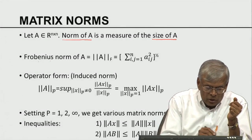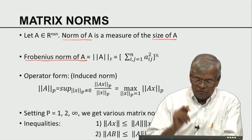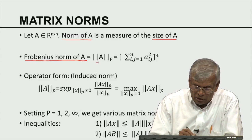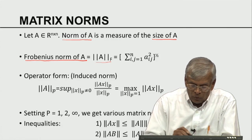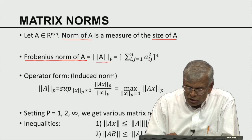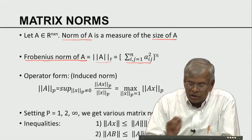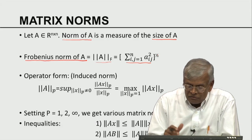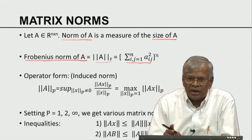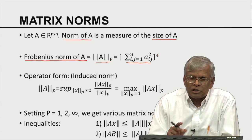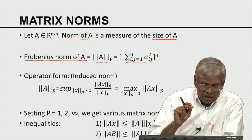The first norm is called the Frobenius norm. The Frobenius norm of A is simply an extension of the Euclidean norm to matrices, denoted with subscript F. You take the sum of the squares of all elements of the matrix and take the square root. This is exactly how we defined the Euclidean norm — the square root of the sum of squares — here applied to all n² elements of the matrix.